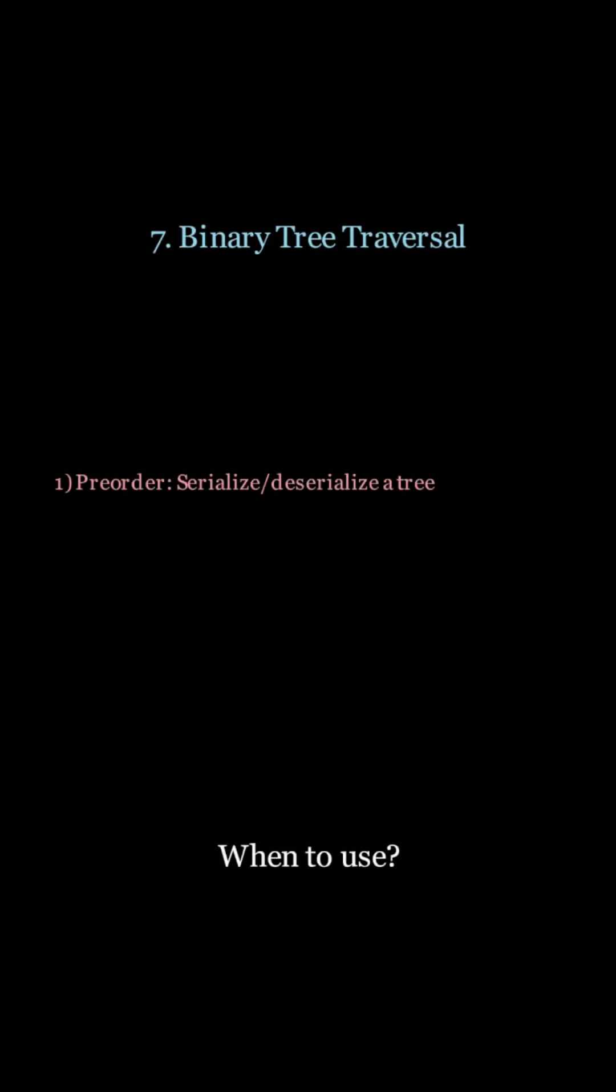Use the pre-order traversal when you want to serialize and deserialize a tree. Use in-order traversal when you want to retrieve the elements in sorted order, such as binary search trees.